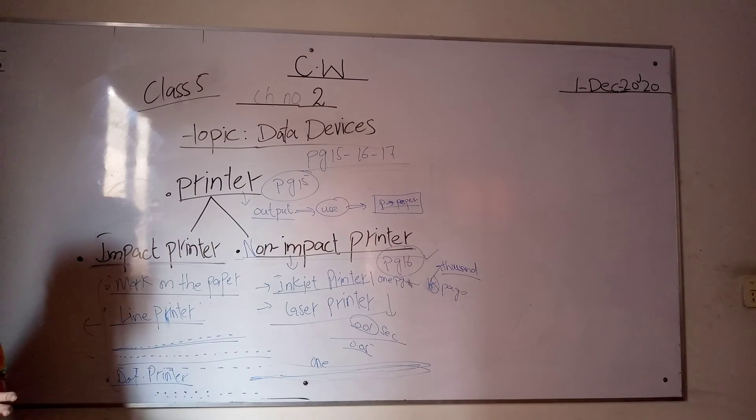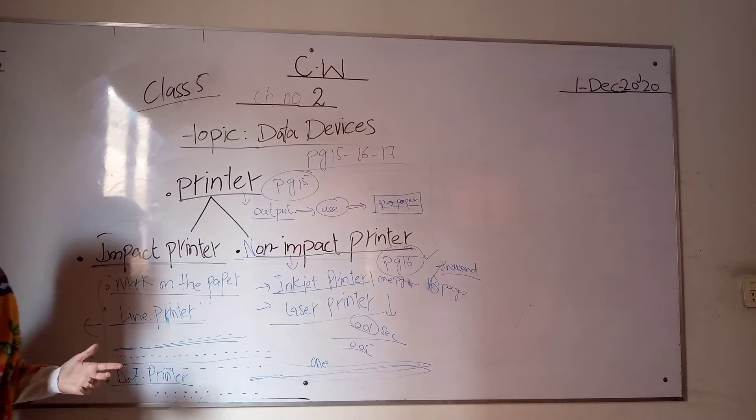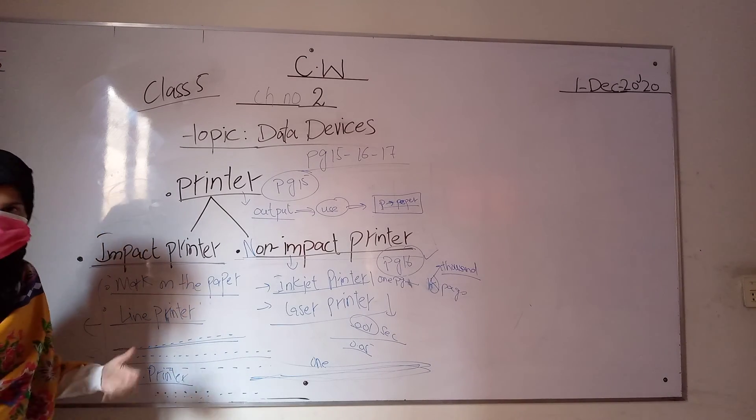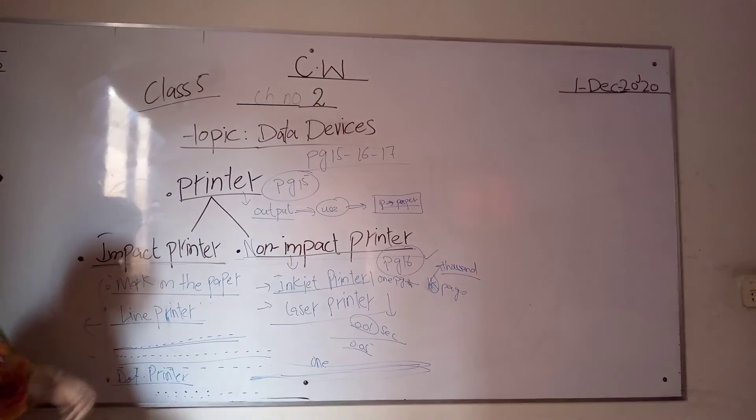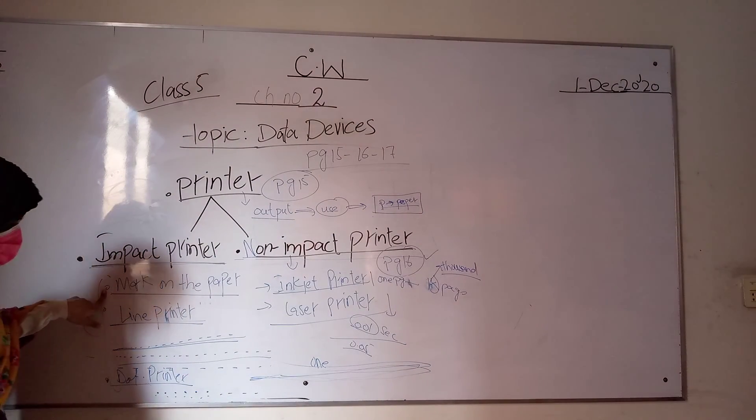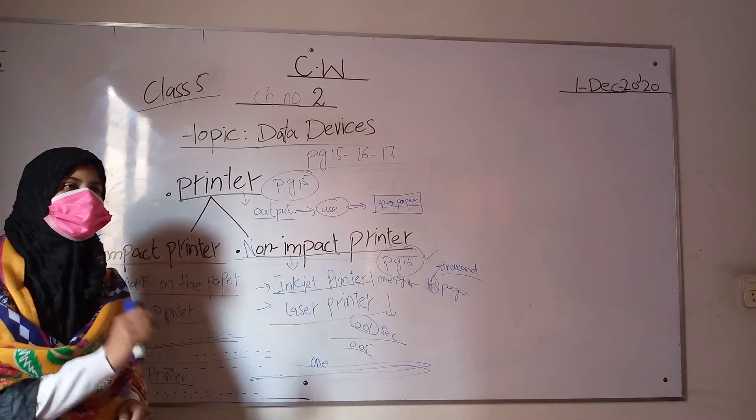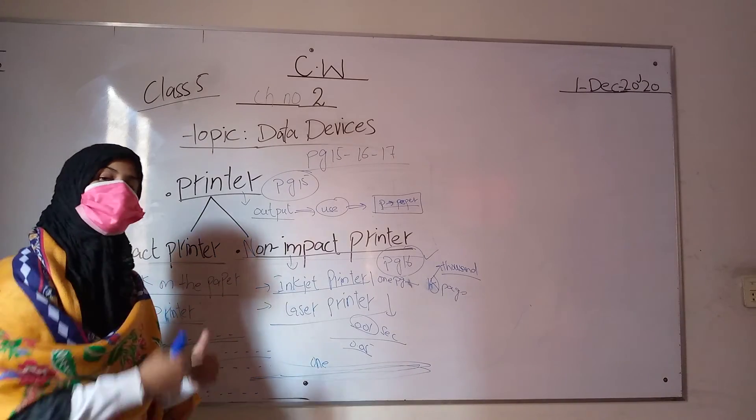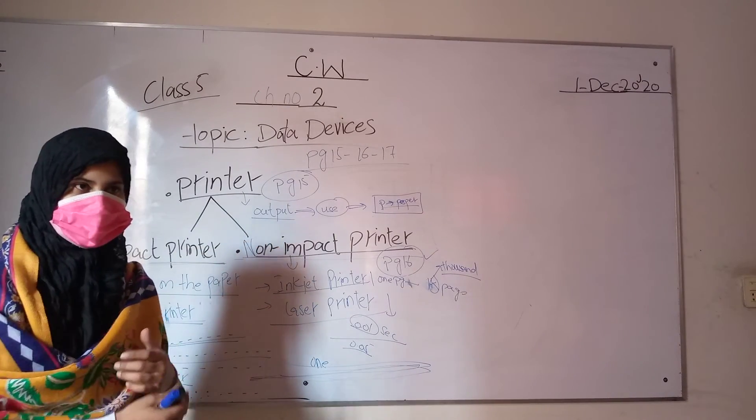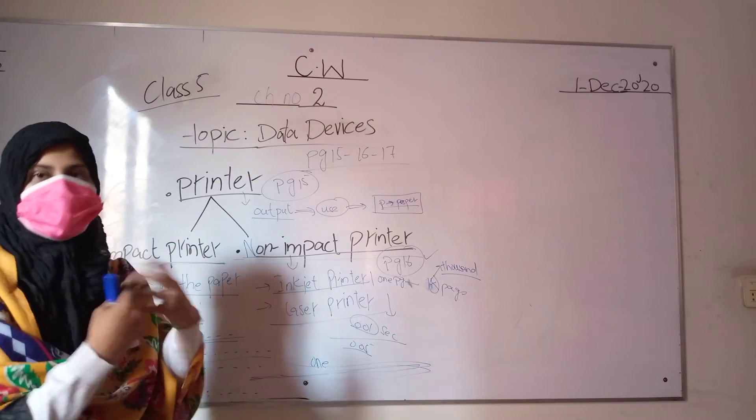Impact printers are very cheap printers used a long time ago when people didn't have much concept of modern technology. They used line printers and dot matrix printers. At that time, it was significant for them because technology was not developed and the country was not advanced.